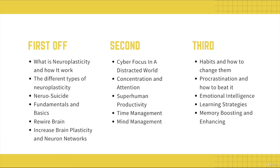First off in this course, we're going to be talking about what neuroplasticity is and how it works in more depth. We're going to see that there are different types of neuroplasticity. We're going to talk about neuro-suicidal actions, experiences, and behaviors — things we do on a daily basis that work as a reverse neuroplasticity, actually damaging your brain rather than helping it. Then we're going to look at fundamentals and basics that can help you understand neuroplasticity really well, and learn how to rewire your brain, increase your brain plasticity, and strengthen neuron networks.